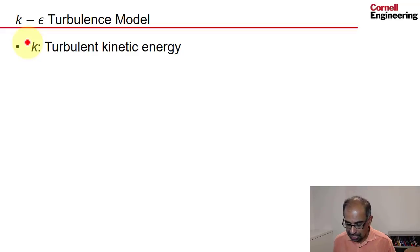k is a turbulent kinetic energy, so it's a measure of how much energy is contained in the fluctuations. More the fluctuations, more the turbulent kinetic energy.